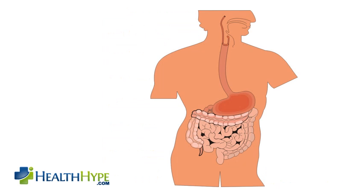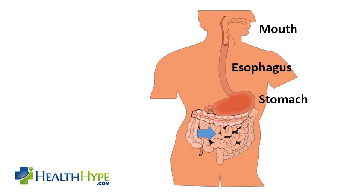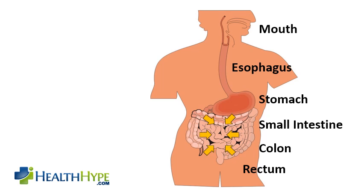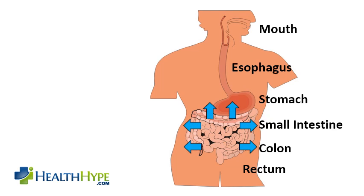Let's look at how stool is formed in order to understand how diarrhea occurs. Food enters the mouth and is broken down in the stomach and small intestine. Water is pumped into the small intestine to help with digestion and absorption of nutrients. The fluid is then reabsorbed in the large intestine to form soft but solid stool.